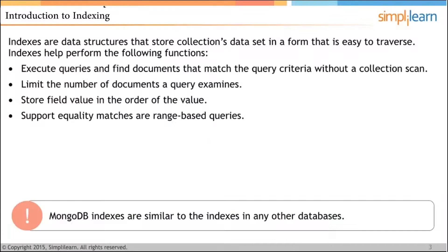Indexes help perform the following functions: execute queries and find documents that match the query criteria without a collection scan, limit the number of documents a query examines, store field values in the order of the value, and support equality matches as well as range-based queries. MongoDB indexes are similar to the indexes used in any other database.